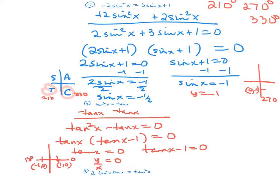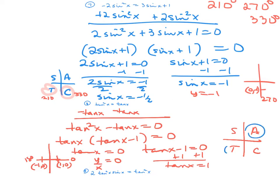For the other factor, adding 1 gives tangent x equals 1. Remember, tangent of 45 is 1. All students take calculus — tangent is positive in quadrants 1 and 3. So 45 degrees, and then 180 plus 45 gives 225. This one has four answers: 0, 45, 180, and 225 degrees.